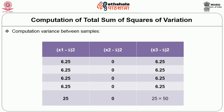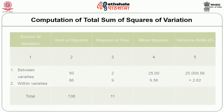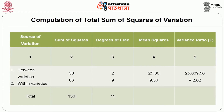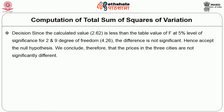Then, the computation of variance between samples and variance within samples are given in the following tables. Based on the above tables, we can construct the ANOVA table. The first column shows the source of variation, the second column shows the sum of squares, the third column shows the degrees of freedom, the fourth column shows the mean sum of squares, and the last column shows the F-value.